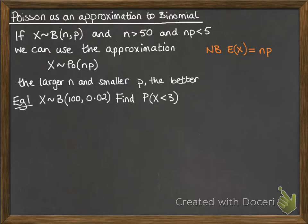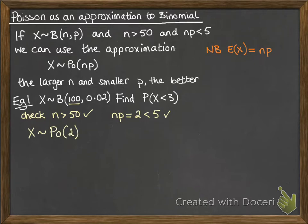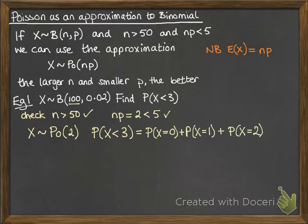Here's an example. Let's just do a little check: n is bigger than 50, and np is 2, so that is less than 5. So we can approximate this as a Poisson distribution. X is going to follow a Poisson distribution where lambda is 2 (np equals 2). Now we want to work out the probability that x is less than 3, which is the same as the probability that x equals 0, 1, or 2. We work out each of those and get the final answer.